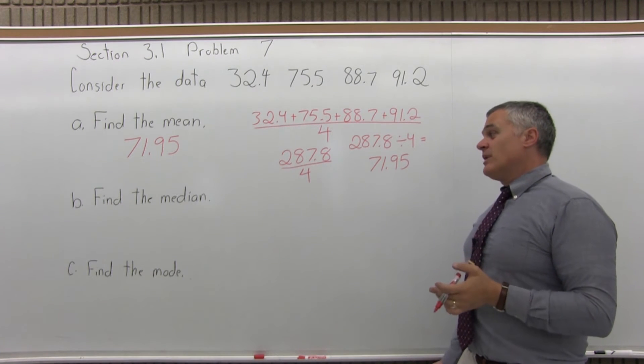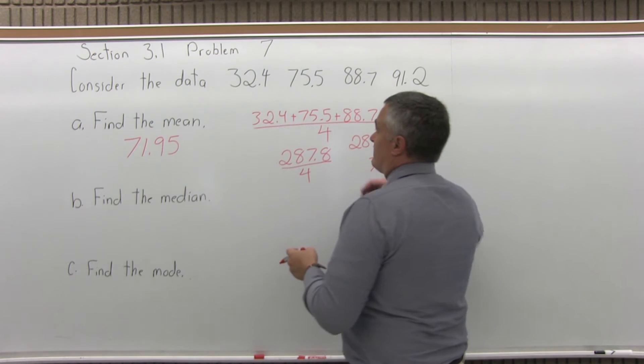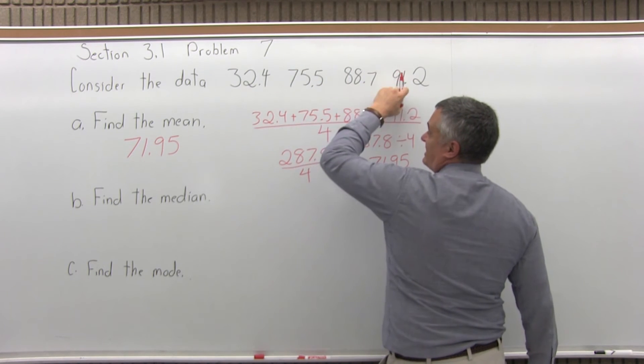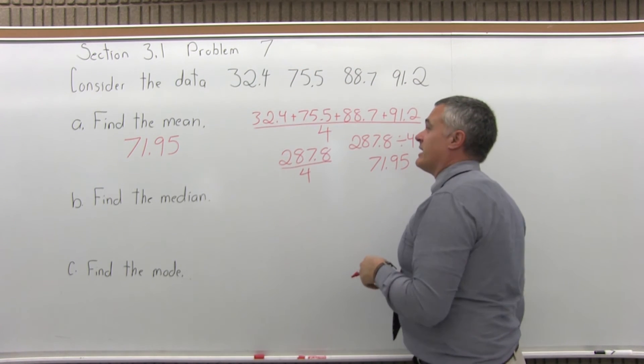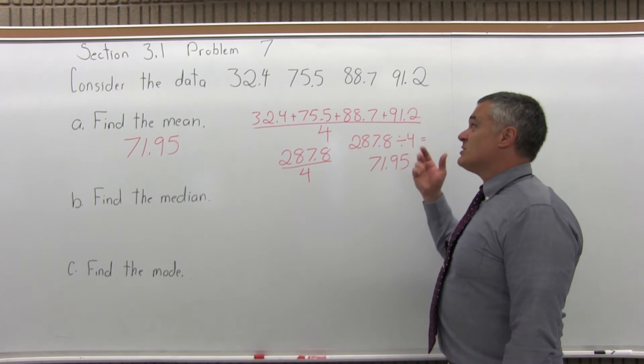Now, for the median, you have to put the list in order and find the middle. Fortunately for this problem, the list actually is in order. 32, 75, 88, 91, it goes in increasing order, so I don't have to do any extra work to get the list in order, which helps. The decimals do slow you down.